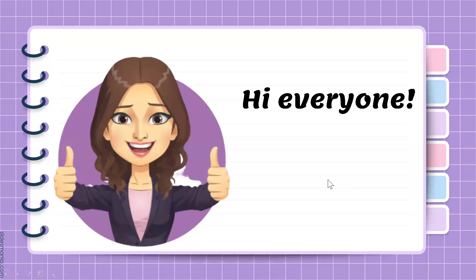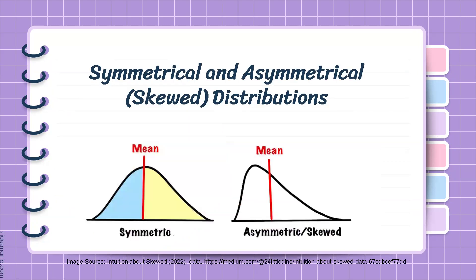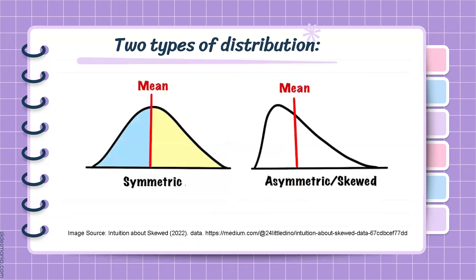Hi, everyone! This is Teacher Othel, and today I will be discussing the two types of distributions: symmetrical and asymmetrical, or skewed. The key difference between symmetrical and asymmetrical distributions lies in the shape and balance of data.